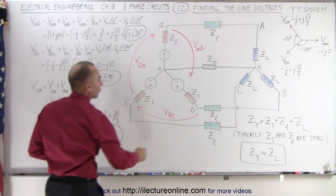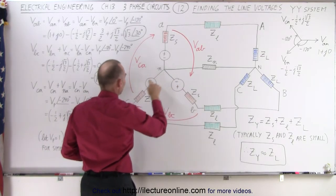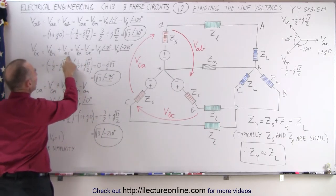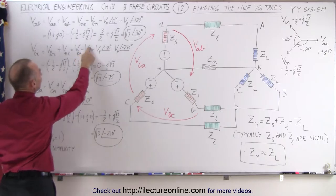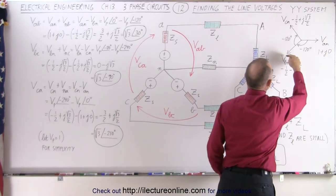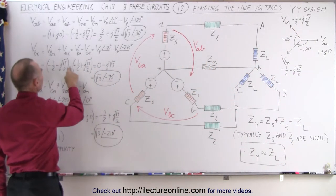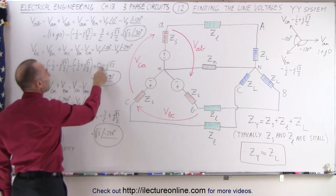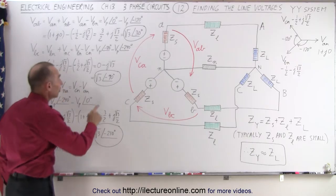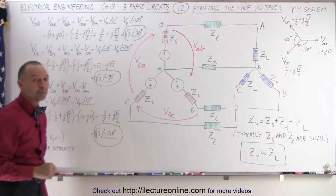We can do the same from B to C. It would be the voltage from B to N plus the voltage from N to C — that's the same as the negative of the voltage of C to N. Based upon the phasor diagram, we take voltage V_BN and subtract from that voltage V_CN, which gives zero minus j times the square root of three. The magnitude is the square root of three times the phase voltage at an angle of minus 90 degrees.